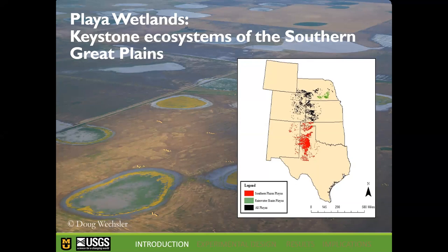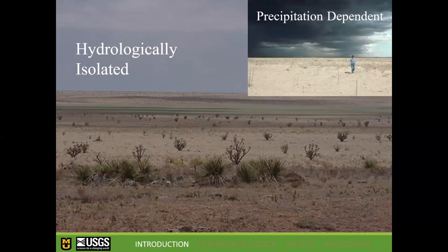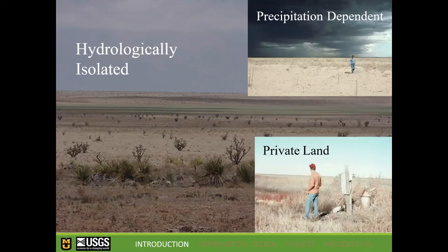Playas are depressional wetlands on the landscape with unique features that allow them to provide a lot of ecosystem services in the Great Plains. One reason we chose to study playas instead of Missouri wetlands is that they're hydrologically isolated and completely driven by precipitation. Each depressional wetland sits in its own watershed and is not connected to the groundwater — the aquifer sits about 300 feet below the playas.